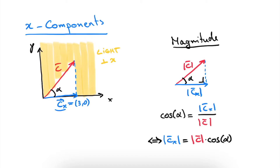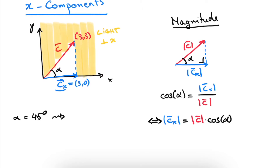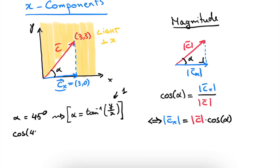The only thing we need now is the angle alpha. For this specific case, alpha is 45 degrees, which will always be the case when c has equal x and y components — and indeed our c has components 3 and 3. For the general formula, alpha equals the inverse tangent of the y component divided by the x component. Here, the y and x components are equal, so this fraction is 1, meaning the inverse tangent of 1 equals 45 degrees. The cosine of 45 degrees equals the square root of 2 divided by 2, or 1 over the square root of 2.